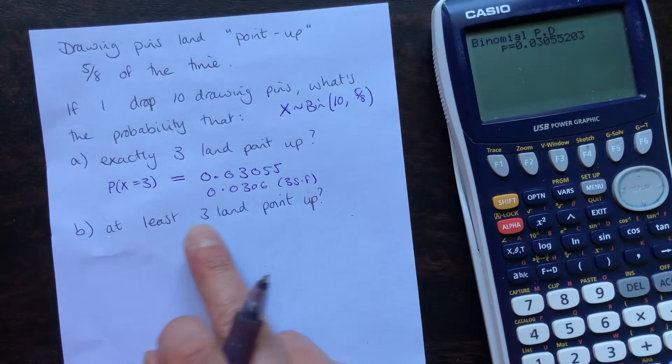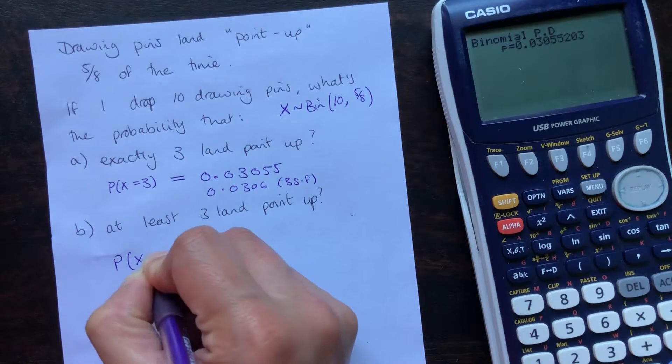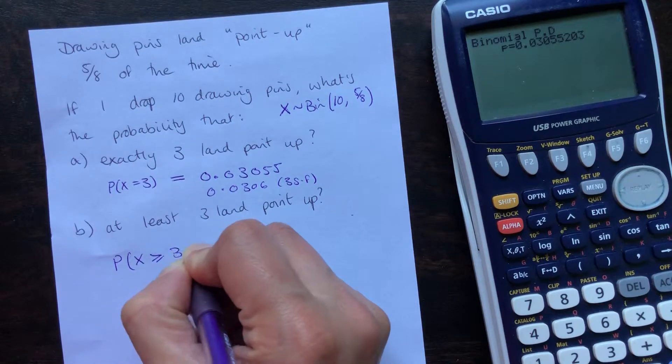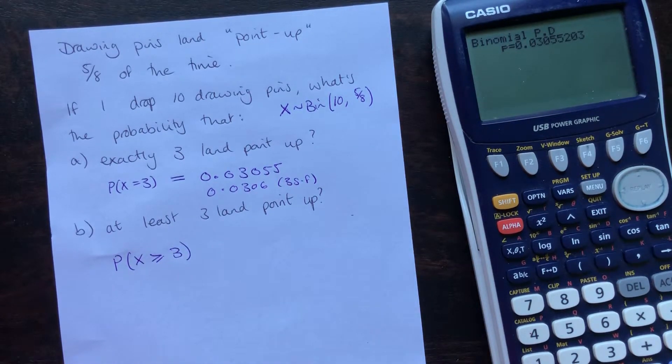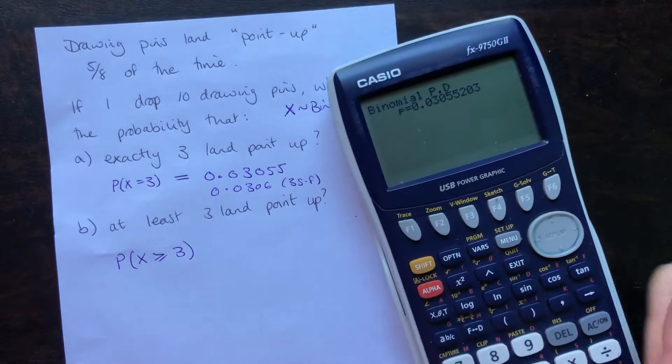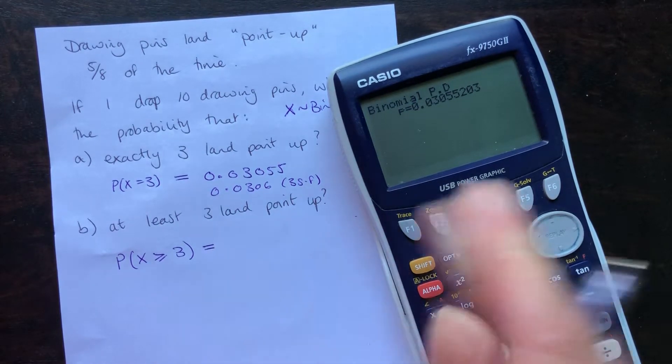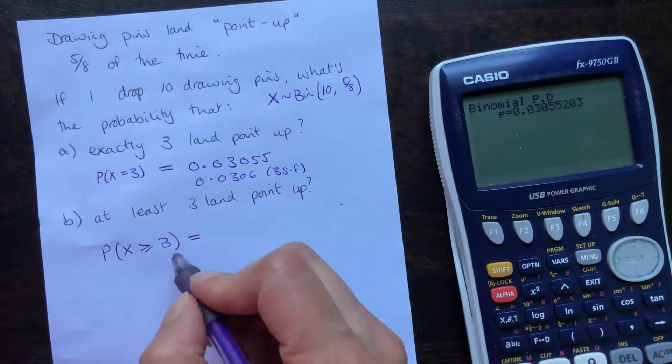What's the probability that at least three land point up? This is slightly different. This is three or more. So, we want X can be greater than or equal to three. One thing to note about your graphics calculator, it can work with these multiple values, but only the less than ones. So, we need to convert that into what else we could think about with that.